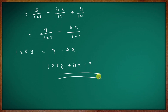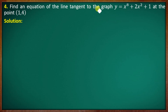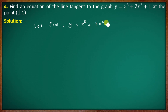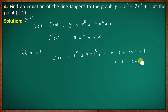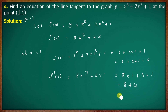Find the equation of the tangent line to y = x⁸ + 2x² + 1 at the point (1, 4). Let f(x) = x⁸ + 2x² + 1. Then f'(x) = 8x⁷ + 4x. At x = 1: f'(1) = 8·1⁷ + 4·1 = 8 + 4 = 12.